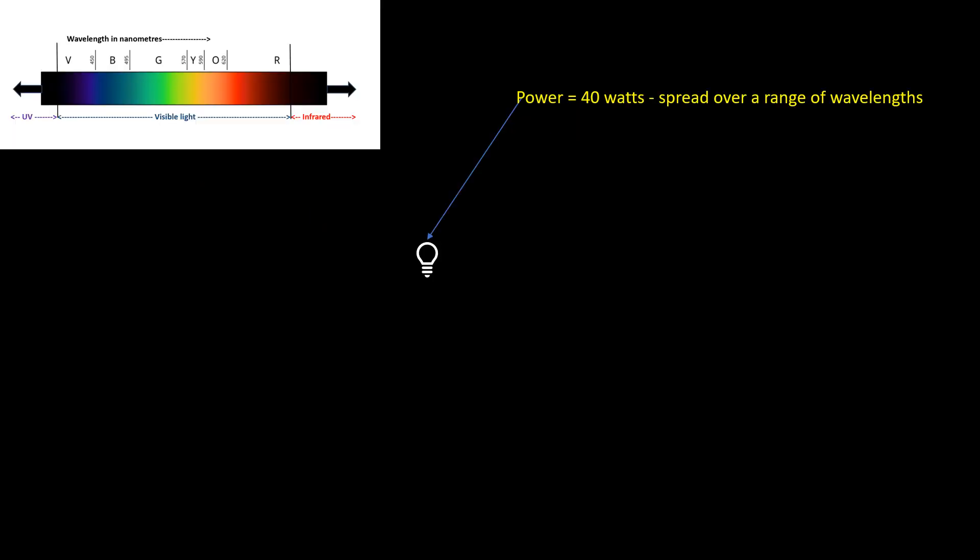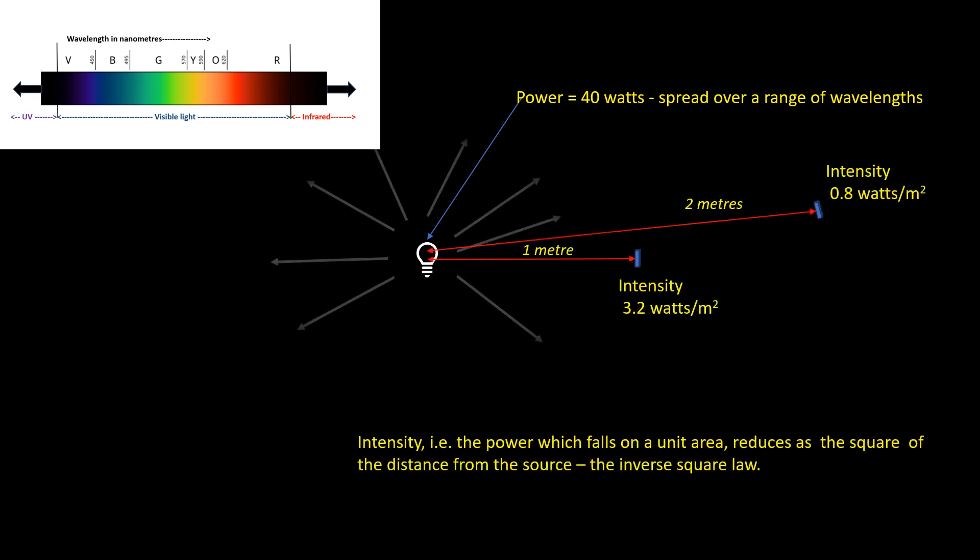Sources of electromagnetic radiation emit radiation over a wide range of wavelengths. The power emitted is measured in watts. The intensity of electromagnetic radiation is the power falling on a unit area and is measured in watts per square meter. The intensity of radiation falls with the distance from the source due to the well-known inverse square law.